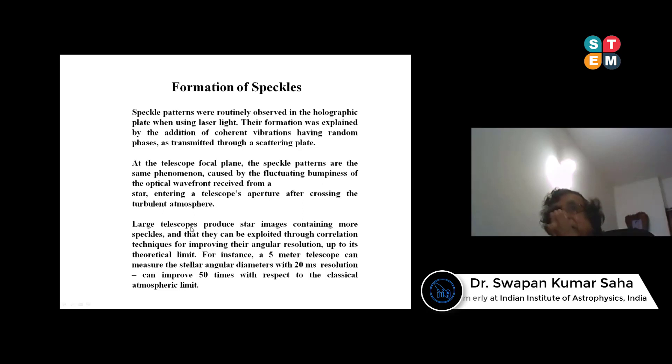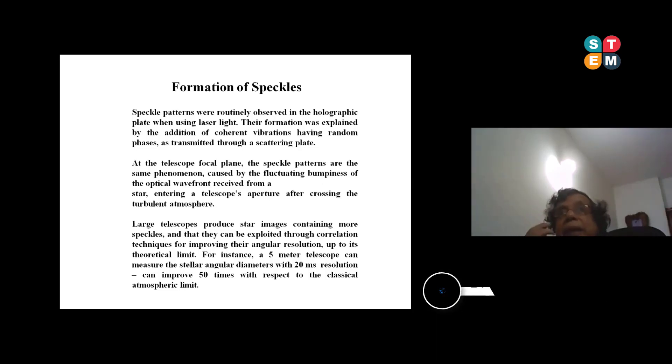How does it form? In the 60s holography was a more important subject. At the time they found out once the laser light is flashing through that plate, they found out some kind of a grainy structures. These grainy structures are nothing but speckles, called laser speckles, and their formation was explained by the addition of coherent vibrations having random phases as transmitted through a scattering plate.